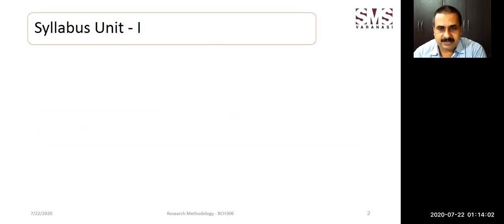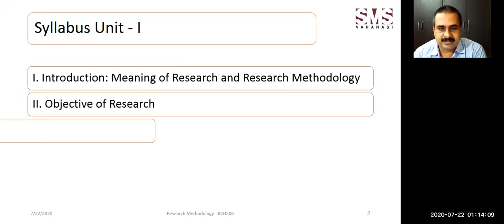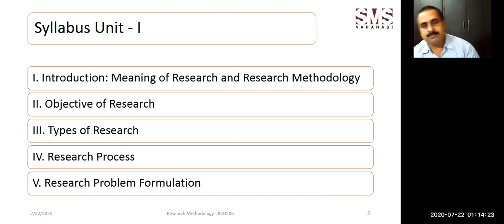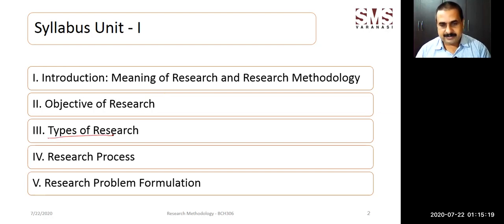In the first unit we are going to cover the introduction — meaning of research and research methodology, objectives of research, types of research, the research process, and research problem formulation. Out of these five sections, the most important would be types of research and research process. I will take you through a practical example of research process and show how you can relate it to a real life situation — for example when you are facing a personal problem and need to come out with a solution.